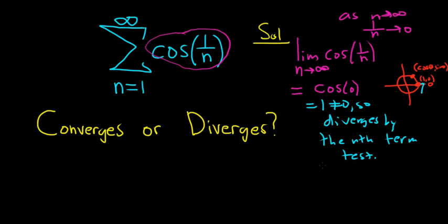Whenever you have an infinite sum, the first test you should always do is the nth term test. Take the limit as n approaches infinity, and if you don't get 0, then it diverges. In this case we got 1, which is not 0, so the series diverges. That's it!